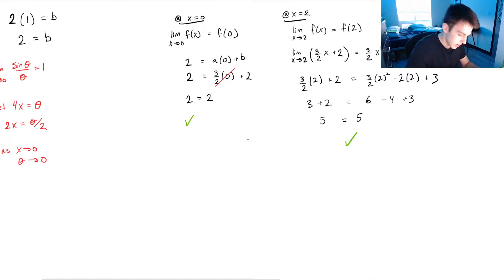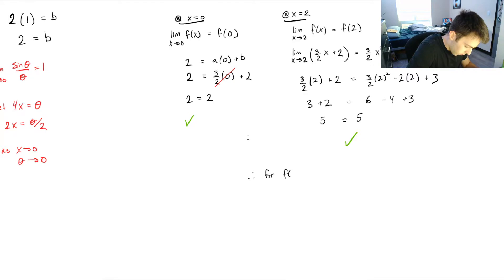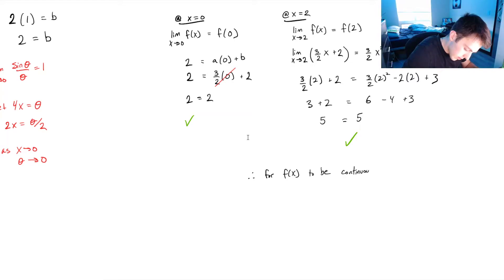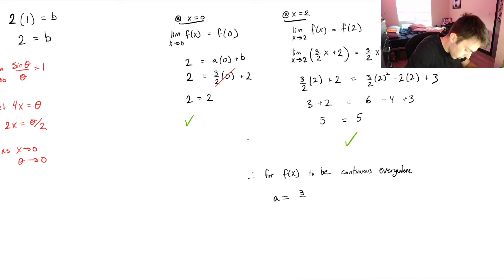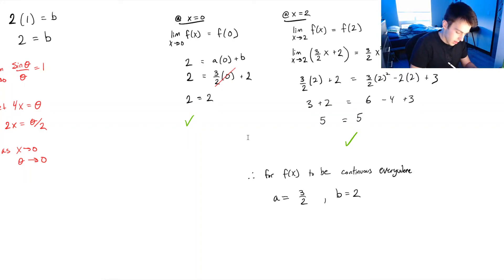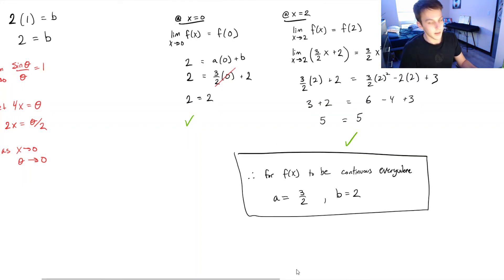We've now shown that all three conditions are met at both transition points x=0 and x=2. Therefore, for f(x) to be continuous everywhere: A = 3/2 and B = 2. That is our final answer.